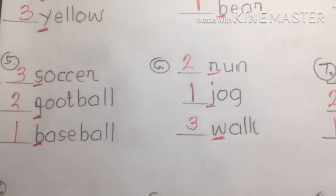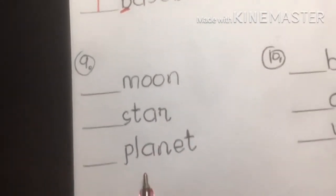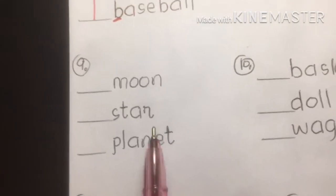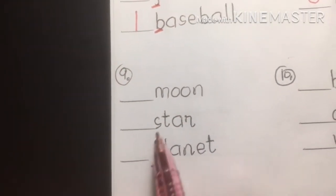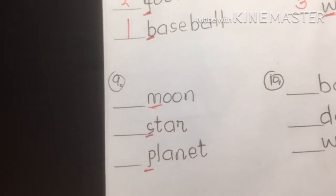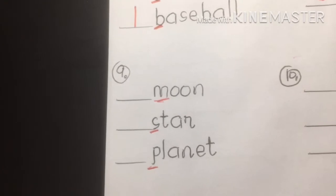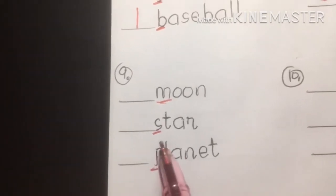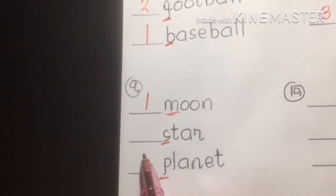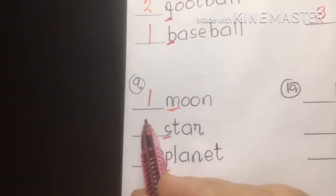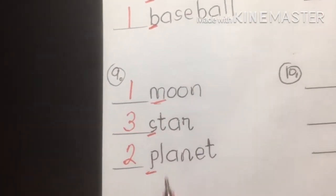Number nine: moon, star, planet — parts of the universe. The answer: moon is number one — M comes first. Planet is second — P. And star is third — S. So: moon, planet, star.